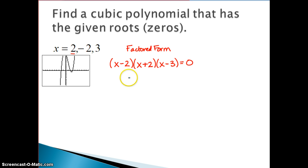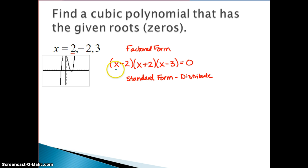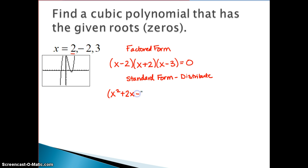Many directions say you should write your answer as a polynomial, and when you write an answer as a polynomial, you write it in standard form. Standard form means you need to distribute — or as many of you refer to it, FOIL. I'm first going to distribute the first two sets of parentheses together: x times x is x squared, x times positive 2 is plus 2x, then negative 2 times x, and negative 2 times negative 2. I still have my third factor listed.